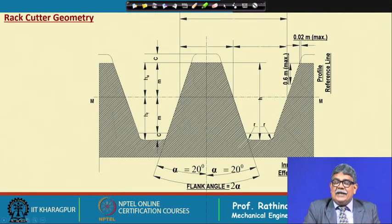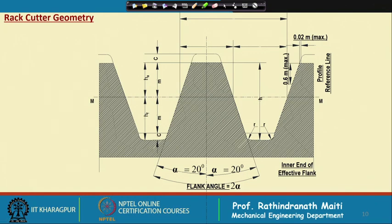The rack cutter, or hobbing generic tool, is like a rack with teeth used for cutting gears. The addendum height of the standard rack cutter above its pitch line equals the addendum of the standard gear, while on the opposite side it is slightly more than the addendum to provide clearance during gear cutting. The proportion of the standard rack cutter defines the geometry needed to determine the actual tooth profile, particularly the tip radius which generates the trochoid at the root.